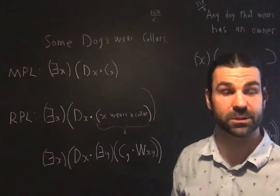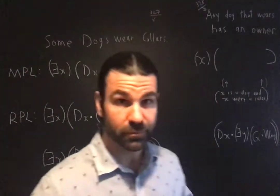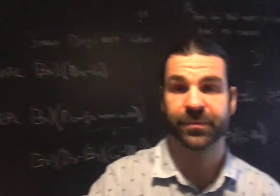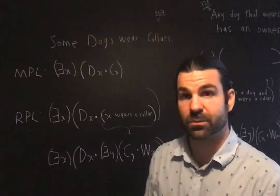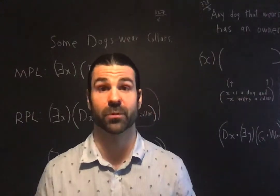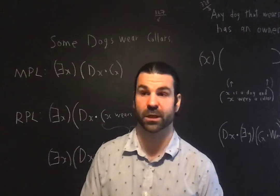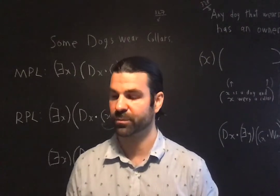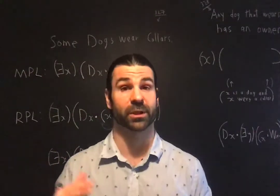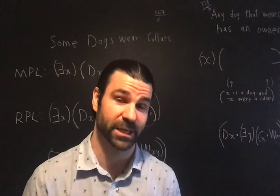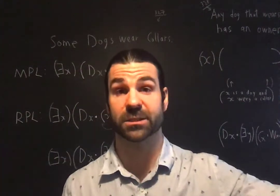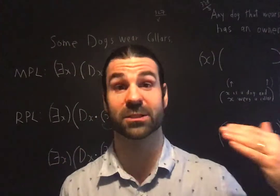If you look at this first example, some dogs wear collars, this one from 3.27, we'll run through it. Then we'll run through an example on 3.28: any dog that wears a collar has an owner. But the first piece of advice she gives is the really crucial advice.